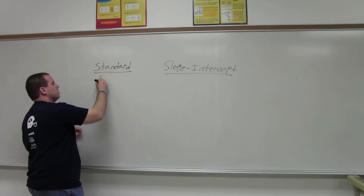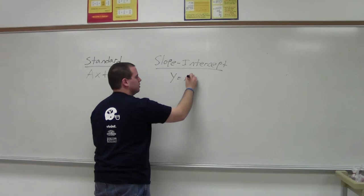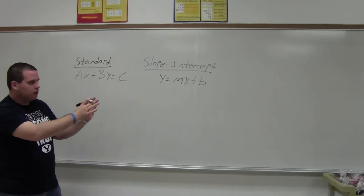The difference that we see in them, standard form looks like AX plus BY equals C. Yes, they're letters, we'll talk like that. Slope-intercept is Y equals MX plus B.